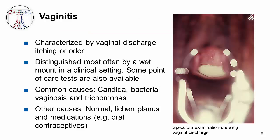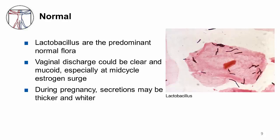Vaginitis is characterized by vaginal discharge, itching, or odor. It is distinguished most often by a wet mount in a clinical setting, and some point-of-care tests are also available. The common causes of vaginitis include candida, bacterial vaginosis, and trichomonas. Other causes include normal or physiologic discharge, lichen planus, and medications such as oral contraceptives. The picture shows a speculum examination with a white vaginal discharge. In a normal vagina, lactobacillus are the predominant normal flora — gram-positive rods on top of regular epithelial cells. Some vaginal discharge can normally be seen; this physiologic discharge could be clear and mucoid, but varies depending on the menstrual cycle and on whether or not the patient is pregnant.